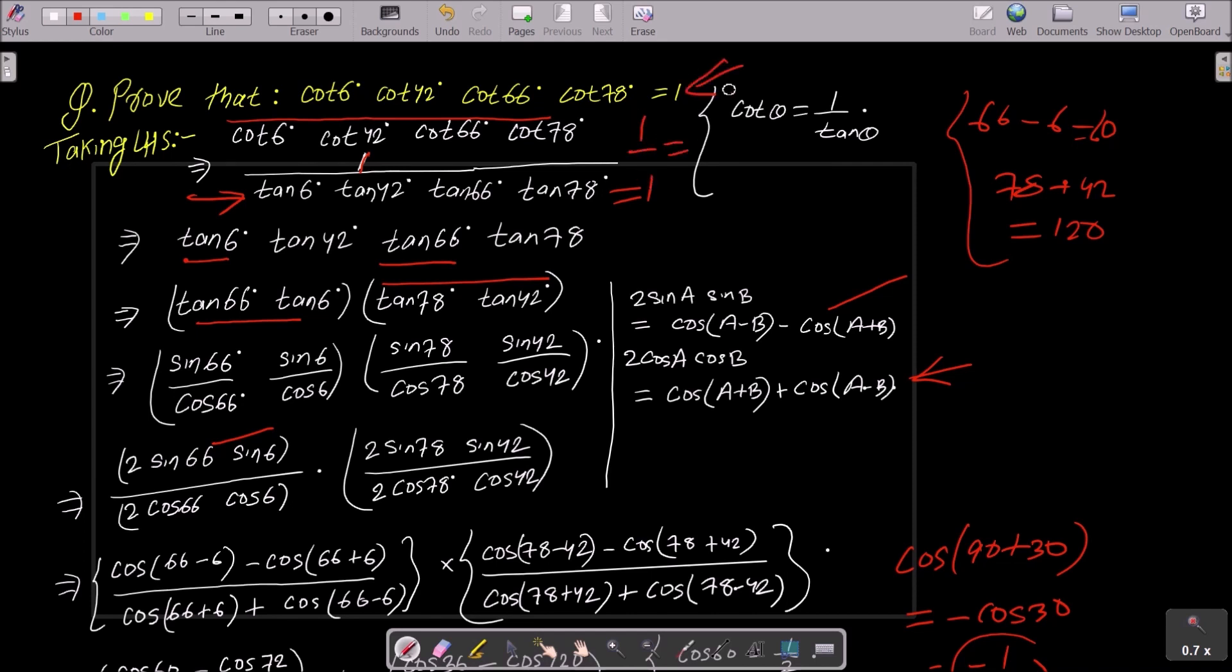So here you can see this is now 1. So we can write LHS equals RHS, that's proved. So you need to change this cot into tan form, then convert into sin and cos, then you can apply these formulas. And you must know cos(60°) and cos(120°) values, put that, then you can get the value of 1. So this value returns 1, and 1 by 1 also equals 1.